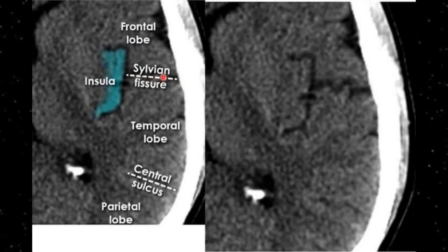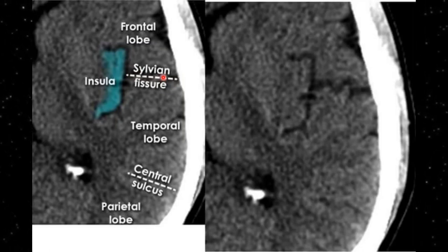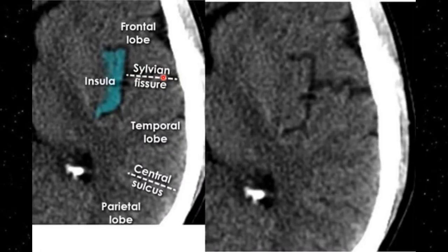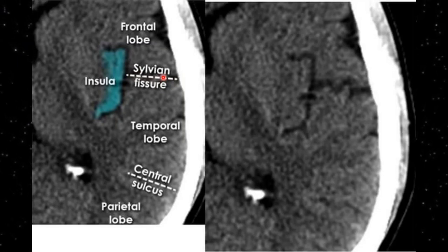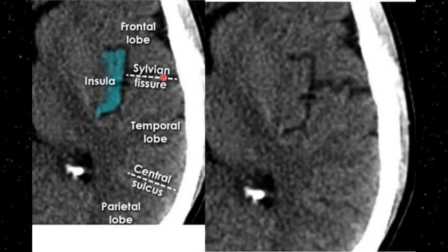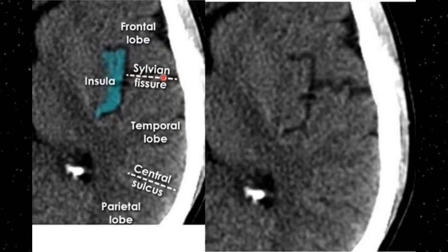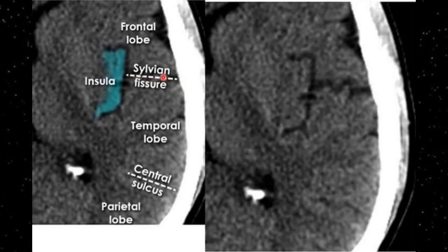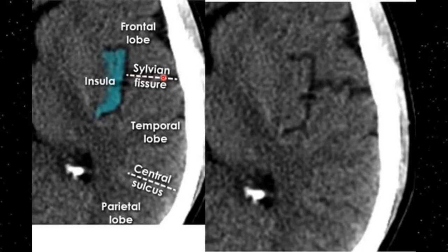On this image you can appreciate the insula in front of the sylvian fissure. On the brain specimen you cannot normally see the insula because it is covered by the frontal, temporal, and parietal opercula. The basal ganglia is made up of gray matter and lined by white matter; it lies deep in front of the sylvian fissure and is a buried structure.